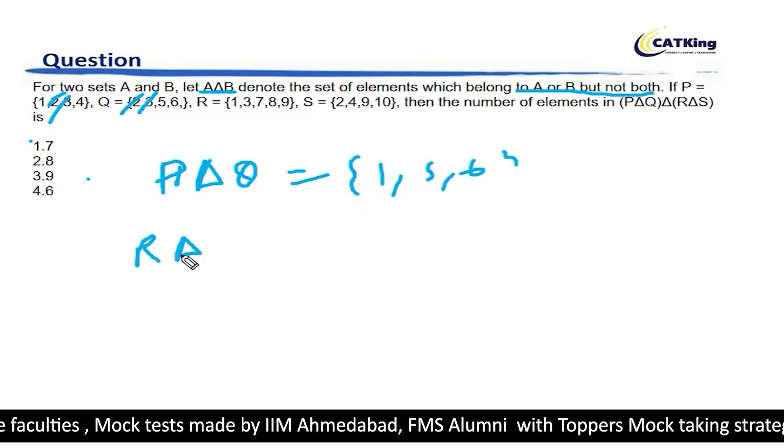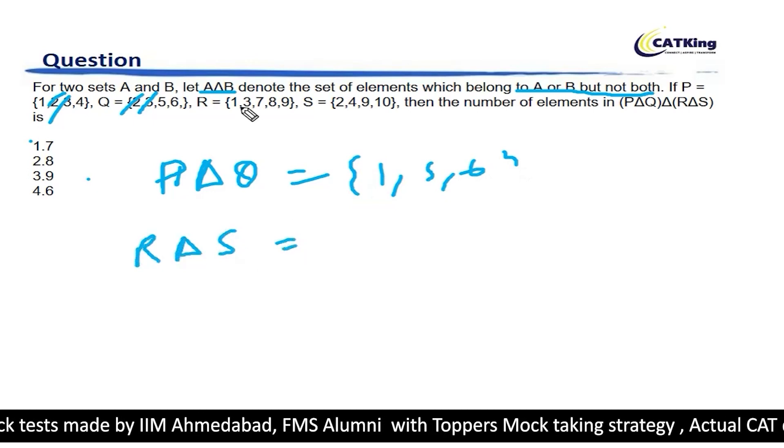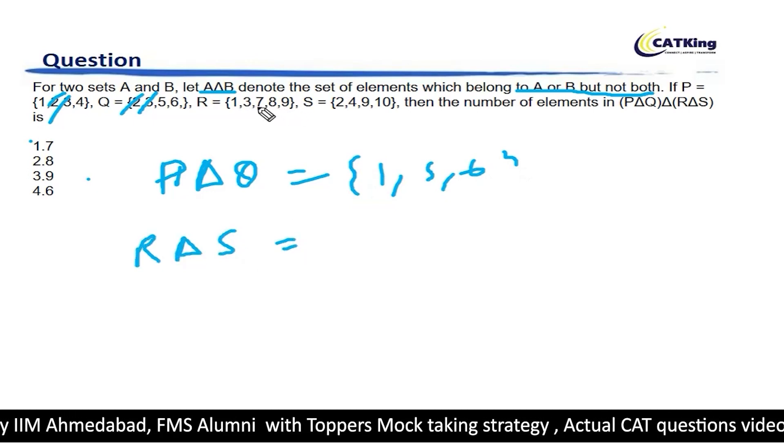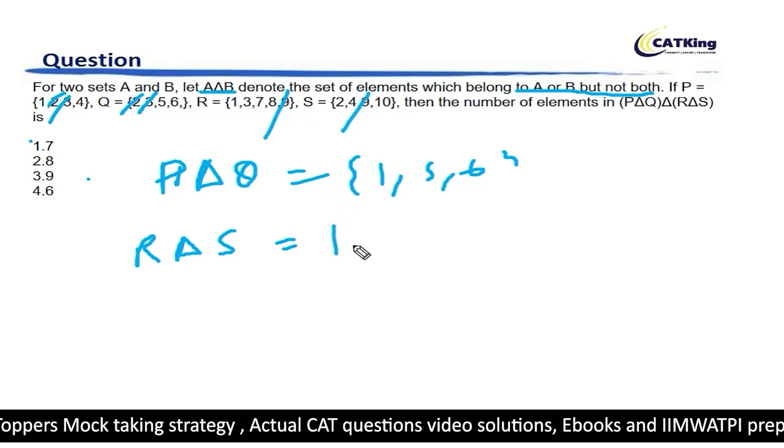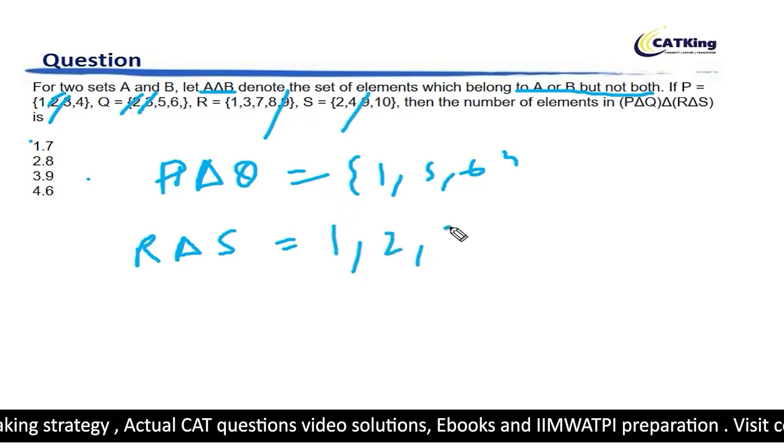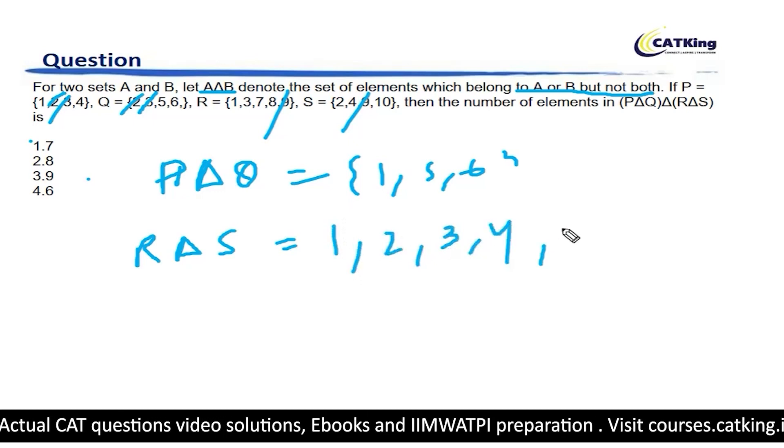Similarly, if you check R delta S - what do we have in common here? So 1, 3, 7, 8, 9 and 2, 4, 9, 10. Only 9 is common, so this becomes 1, 2, 3, 4, 7, 8 and 10.